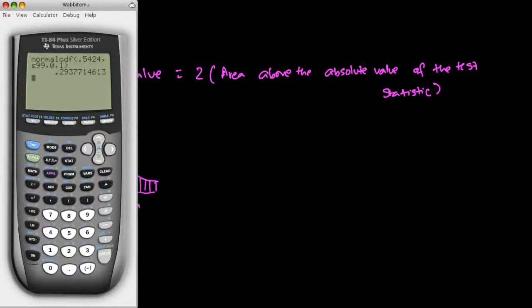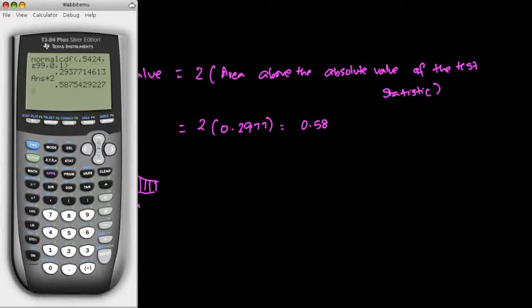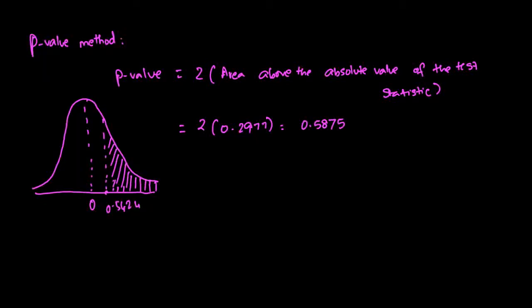Type that in, and we would find the answer as 0.29377. That is nothing but the area above the absolute value of the test statistic. And if I multiply it by 2, I would get the p-value, which is 0.5875. So I end up getting 2 times 0.2977, which is 0.5875.